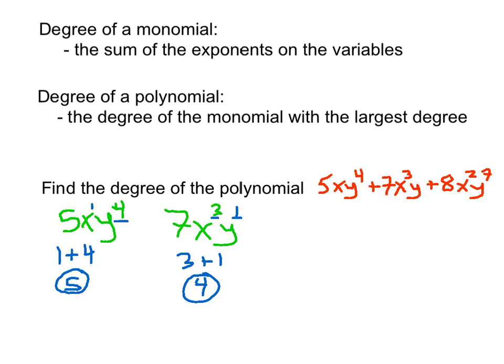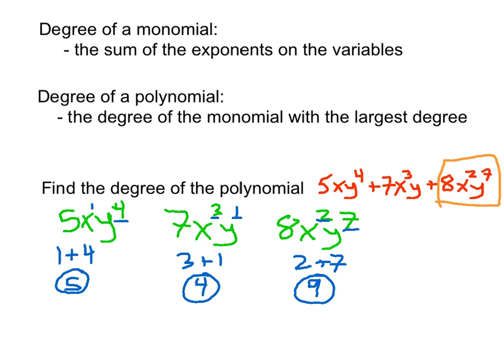And then finally the last monomial, 8x squared y to the seventh. We have two x's being multiplied and seven y's, so 2 plus 7 — the degree of this monomial is 9. The degree of the polynomial is the largest of those numbers, which is 9. So the degree of this polynomial is 9.